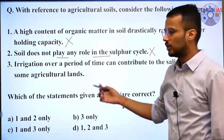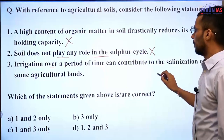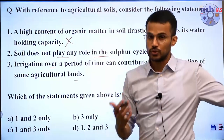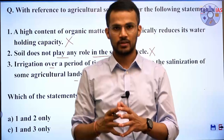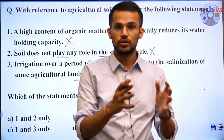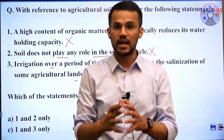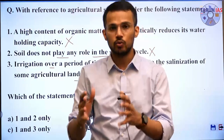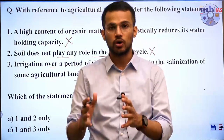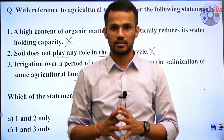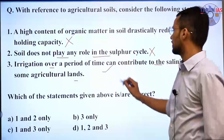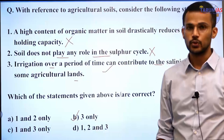The third statement says irrigation over a period of time can contribute to salinization of some agricultural land. Water contains salts, including sodium. As over-irrigated water evaporates or percolates, it leaves behind salts, leading to salinization of agricultural land, which can reduce soil permeability. Third statement is correct. The answer to this question is B — three only.